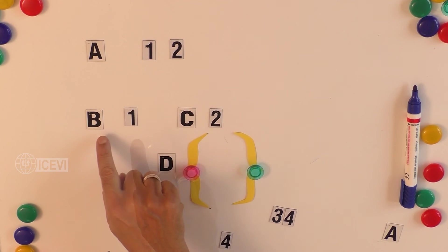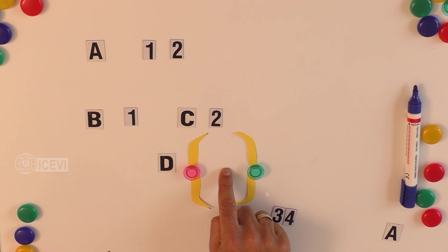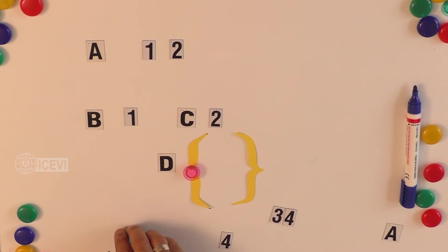So the empty set is also a subset of a set. The set {1, 2} has three proper subsets: one is set B consisting of element 1, second is set C consisting of element 2, and third is set D consisting of no elements, that is the null set.